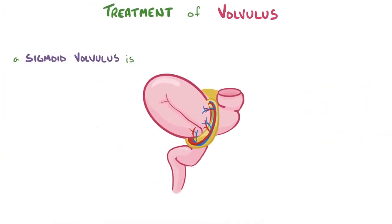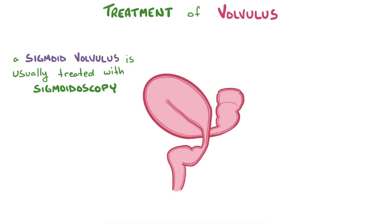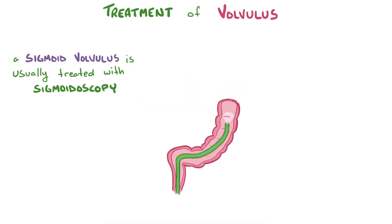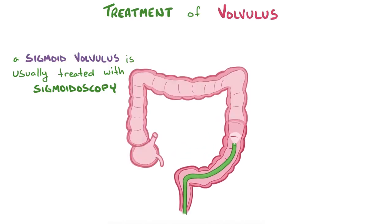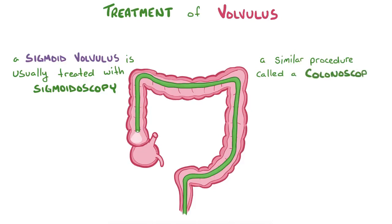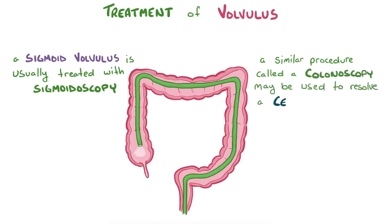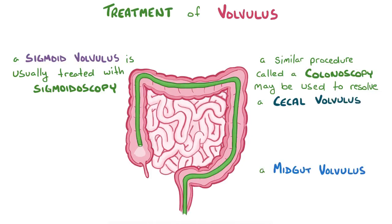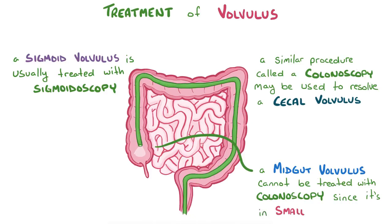A sigmoid volvulus is usually treated with sigmoidoscopy, an examination of the sigmoid colon using a set of flexible tubes inserted through the anus. If the tissues look normal and pink, the tubes untwist and decompress the colon to relieve pressure. A similar procedure called a colonoscopy examines the entire colon and can occasionally be used to resolve a cecal volvulus. However, a midgut volvulus can't be treated with a colonoscopy, since it's even further back in the small intestine.